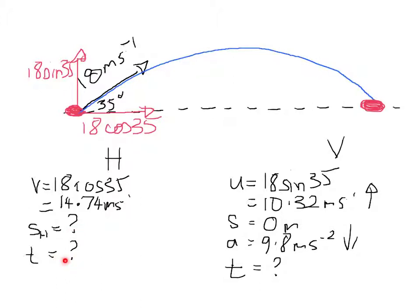On the vertical side of things, we know the initial vertical velocity is 18 sin 35. We know that its vertical displacement is zero because it ends up at the same height as it left at. We know the acceleration due to gravity is 9.8 meters per second per second down. We don't know the time.